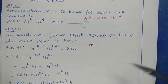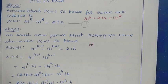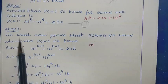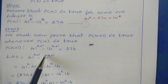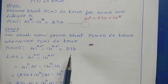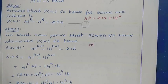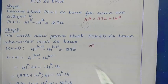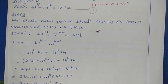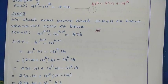Using this assumption, we now prove the statement is true for P of k plus 1. Writing P of k plus 1 — replacing k with k plus 1 everywhere: 41 to the power k plus 1, minus 14 to the power k plus 1, is equal to 27b. Taking the left-hand side of P of k plus 1, we split the exponents: 41^(k+1) becomes 41^k into 41, and 14^(k+1) becomes 14^k into 14.